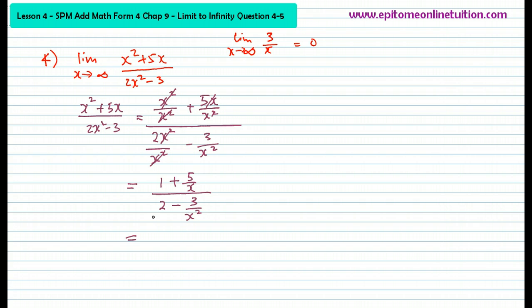So now you have achieved your objective. What's our objective? We want x to be at the denominator of the fraction. See this? x is at the denominator. 5 over x and 3 over x squared. Why do we do this? Because now we can solve this. What is the value of 5 over x when x approaches infinity? The value is 0. And the same goes for here. What is the value of 3 over x squared when x gets bigger and bigger? This value gets smaller.